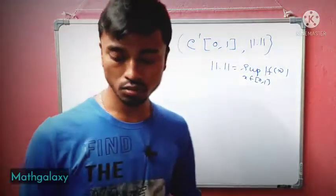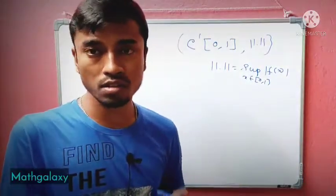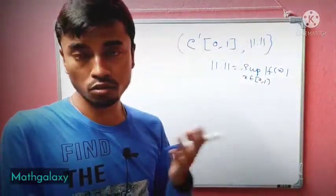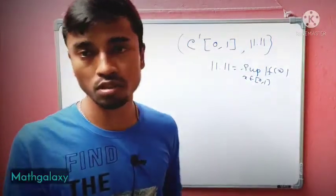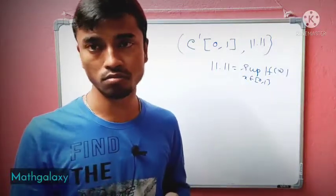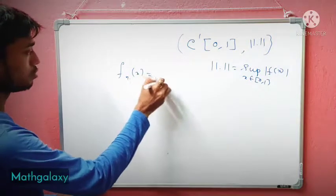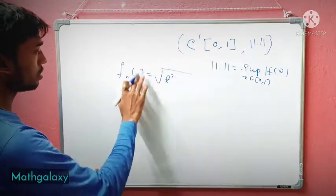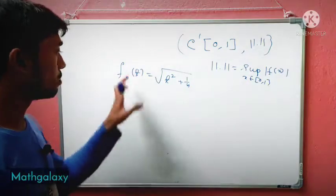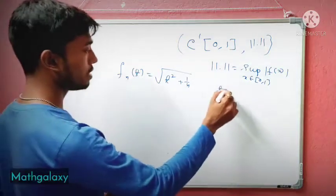Since C¹ means continuously differentiable functions, we take a Cauchy sequence in C¹[0,1] of continuously differentiable functions and check where it converges. We take the sequence fₙ(t) = √(t² + 1/n), where t belongs to [0,1]. This is the function we are working with today.